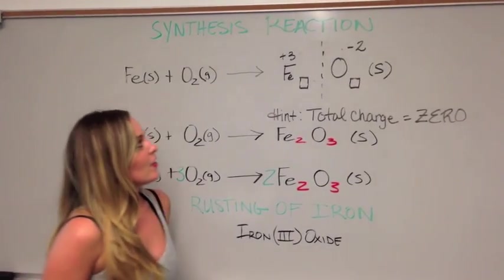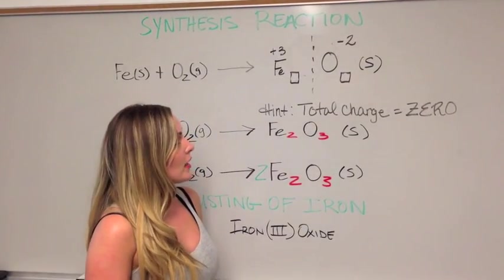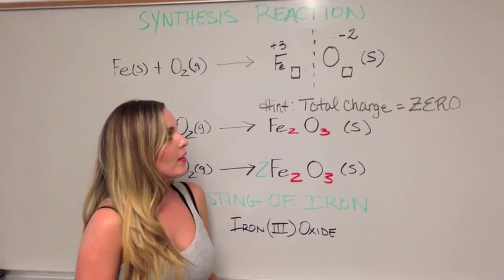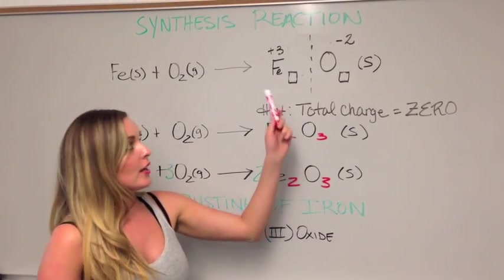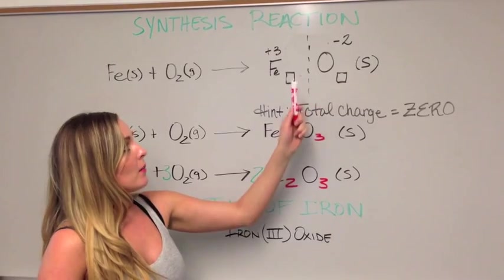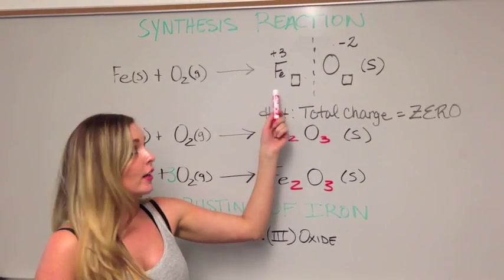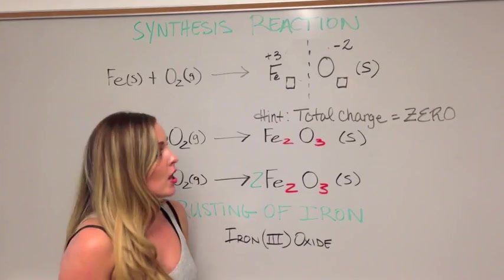So in the criss-cross method, we first identify the charges. We find that Oxygen carries a 2-minus charge, and we find commonly in the rusting of iron that Iron carries a 3-positive charge.